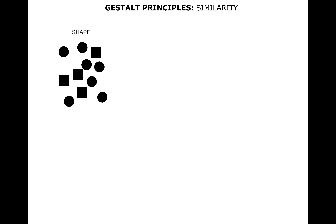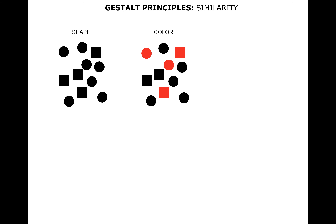Similarity is also a Gestalt principle, and there are several types. It's based on the concept that we look at similar items and they're usually grouped together, and we relate to things that are similar. Shape is one type — we see all the circles together, and we see the squares together. With color, even though we've got circles and squares, we still see the four that are in red right away.